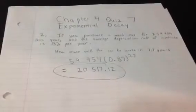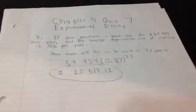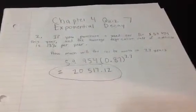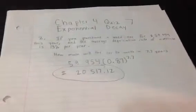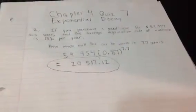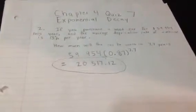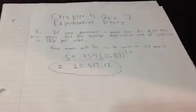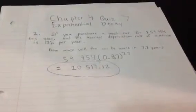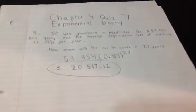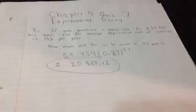that means it's going to go down by 13%. That's why I multiply it by 0.87, not 0.13. Then, I did 0.87 to the power of 7.7, because it's asking how much will the car be worth in 7.7 years. That represents that part of the question.